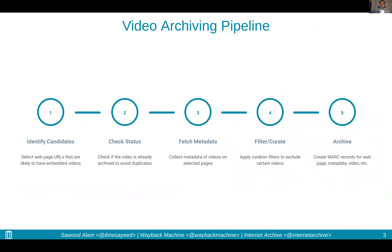At the Internet Archive, for video archiving, we have a pipeline of processes. First, we identify candidate videos and pages that contain those videos. Then we check the status of those videos, whether we have already archived them. Based on that metadata, we filter for curation. And finally, if all the boxes check, we archive those videos and corresponding resources.